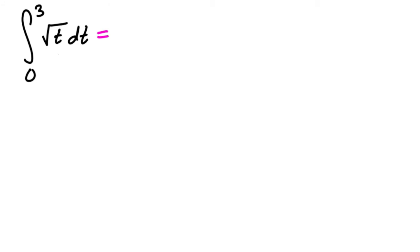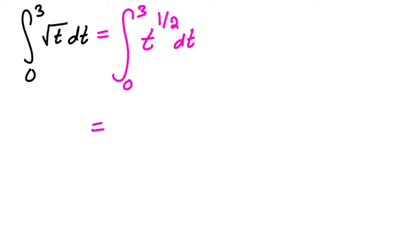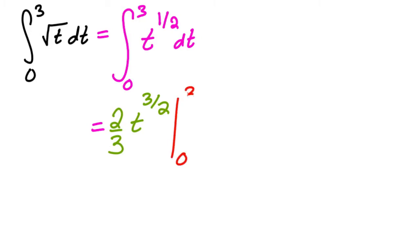When finding the integral of square roots, we convert it into an exponent, so this becomes t to the one half dt — just like when finding derivatives. Using the backwards power rule, the new exponent is one half plus one, which is three halves, and we multiply by the reciprocal two thirds. We evaluate from 0 to 3.